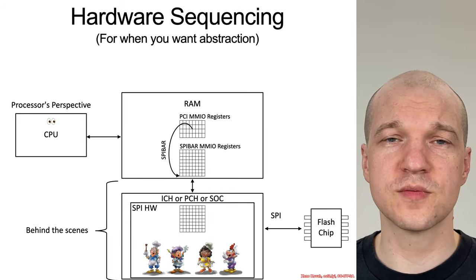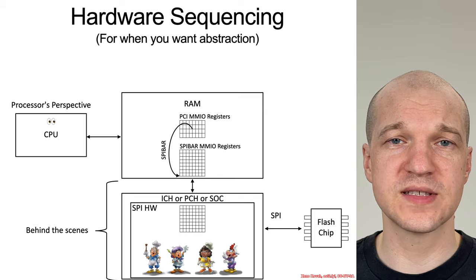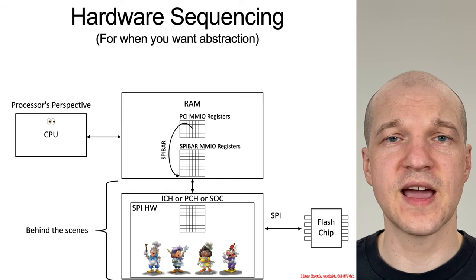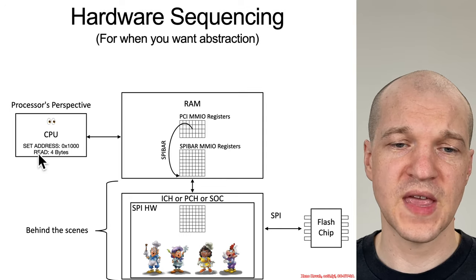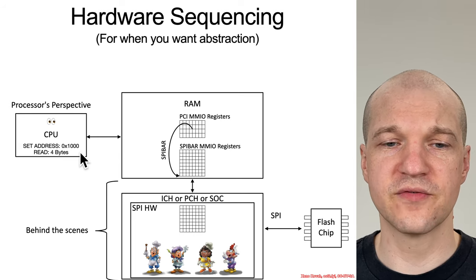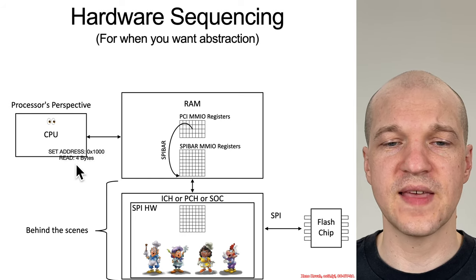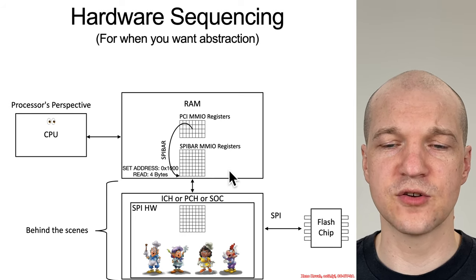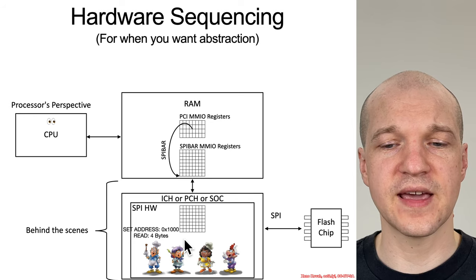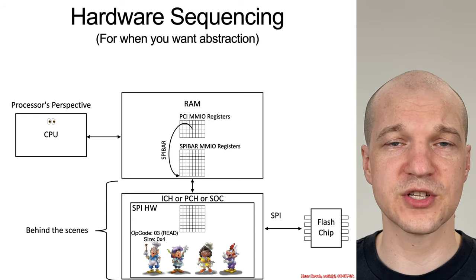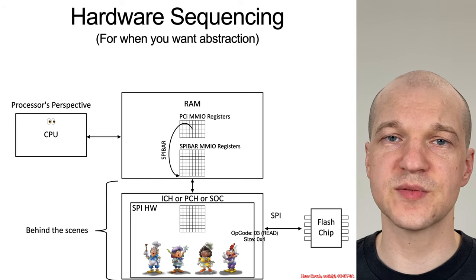There are two forms of accessing the SPI Flash: hardware sequencing and software sequencing. Hardware sequencing is where you basically say, "Hey hardware, do your thing — elves, give me access" — and you don't care about how exactly that works behind the scenes. There's some memory mapped I/O, and you send a command request saying, set the address to read from to hex 1000 in the SPI Flash chip, set the type of action to read four bytes. That is sent to the SpyBar memory mapped I/O, gets translated down into the actual hardware control block for the SPI access, and the elves convert that into a SPI Flash command — for instance, opcode 3 and size of 4. They pass it along and send it over to the SPI Flash chip. That's how you actually read four bytes from the SPI Flash chip.